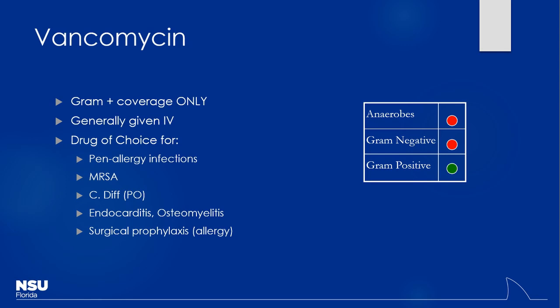Vancomycin is really handy if you have a patient who is penicillin-allergic but you still want gram-positive coverage. For a patient going for surgery, you worry about skin flora getting into the wound. The typical surgical prophylaxis agent is a first-generation cephalosporin like Ancef or Cefazolin. If a patient can't receive that, vancomycin is an alternative for surgical prophylaxis — it'll get the majority of that skin flora.